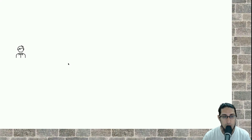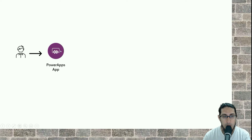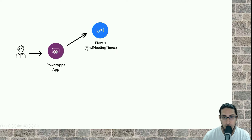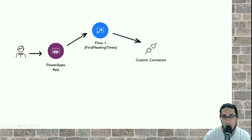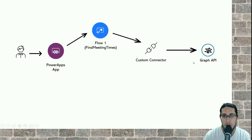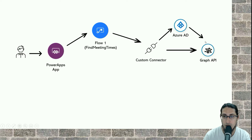The user is going to use a Power Apps application. This Power Apps application will execute a flow to find meeting times, and this flow is going to use a custom connector. These custom connectors communicate with the Graph API. In order to do that, we configure application or delegated permissions in Azure AD, depending on the functions or actions we're going to use from the Graph API.